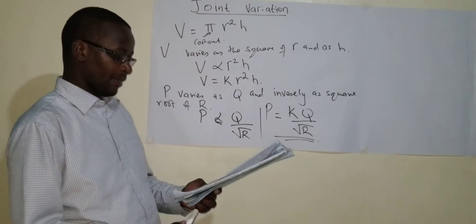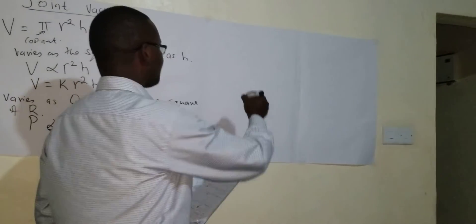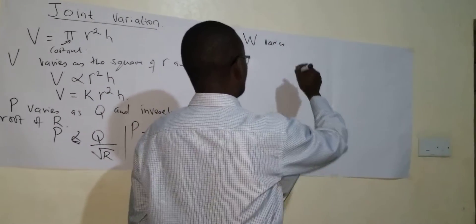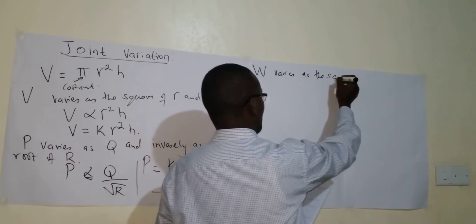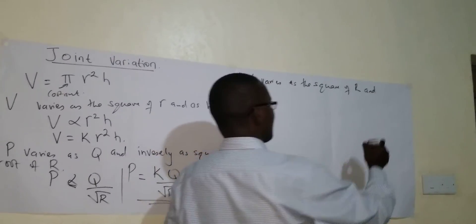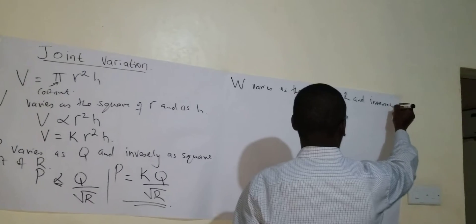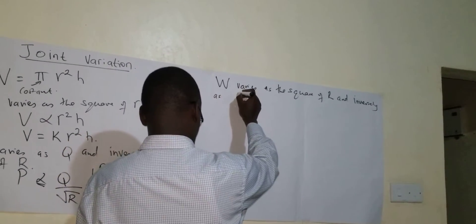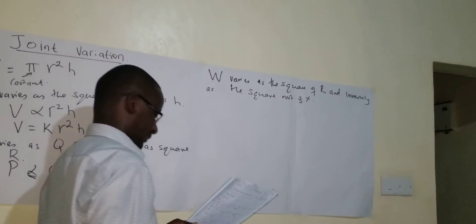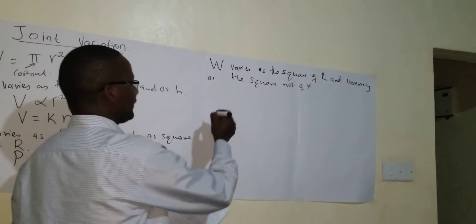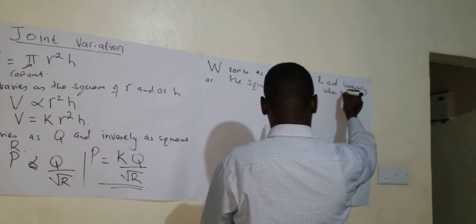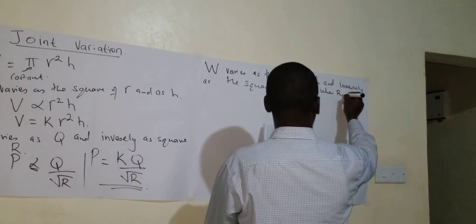I want us to do one more example here. You are told that a quantity W varies as the square of R and inversely as the square root of X. So you are asked to find the square root of X.